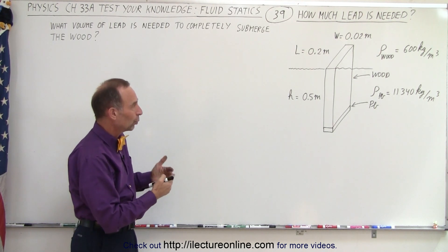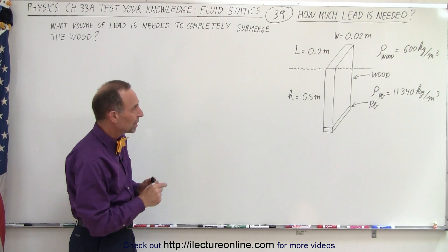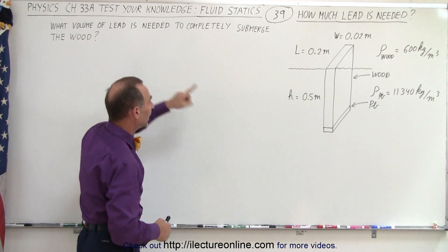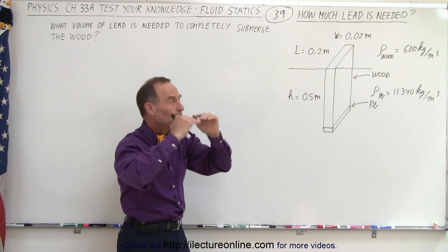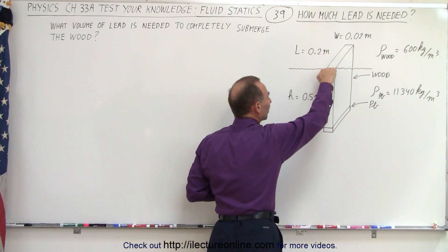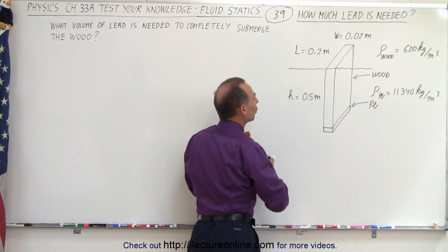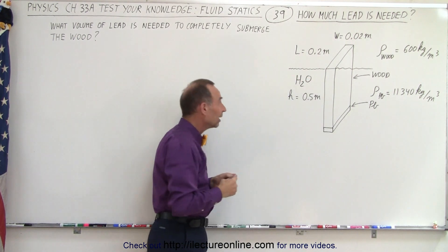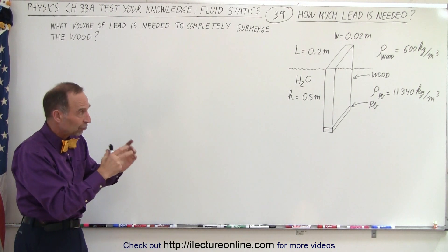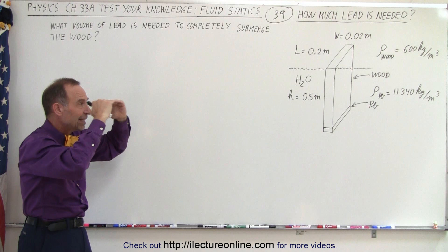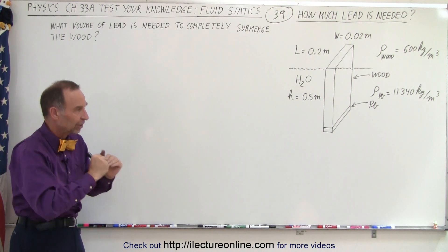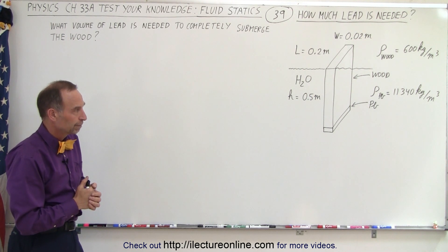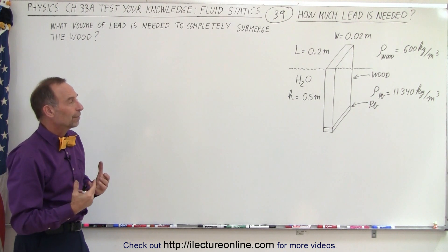They give us the dimensions of the wood: a height of 0.5 meters, a length of 0.2 meters, a width of 0.02 meters. They're asking us what should be the volume of the lead attached to the bottom of the wood such that the wood will reach just at the very top, even with the liquid it's placed in. Of course the liquid is water, so how much lead would we attach to the bottom so that the wood just barely reaches the water surface at the very top?